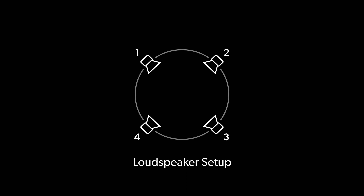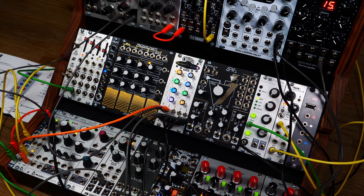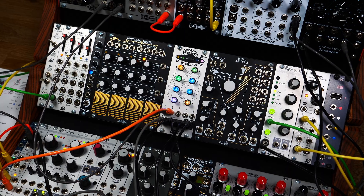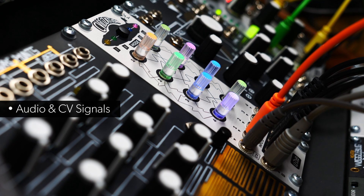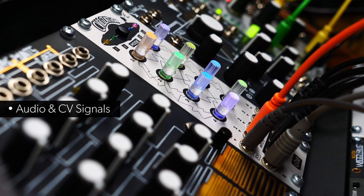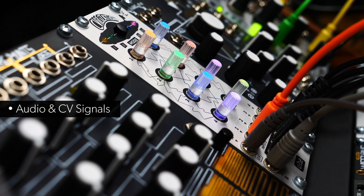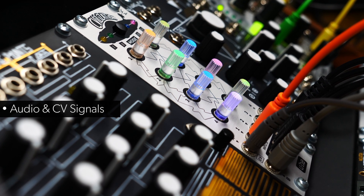The first application that comes to mind is a 4-loudspeaker setup — imagine having a 4-channel surround system for your modular synthesizer. But that's just one of the many ways you can use the Quadraphonic Panner. Mode 4 is suitable for audio and CV signals, making it a creative tool for advanced routing and modulation duties.